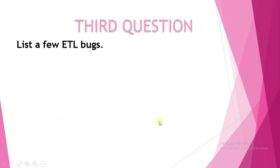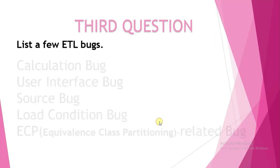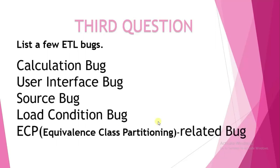The third question is: list a few ETL bugs. Some of the ETL bugs you may encounter in Informatica include: calculation bug, user interface bug, source bug, load condition bug, and ECP (Equivalence Class Partitioning) related bug.